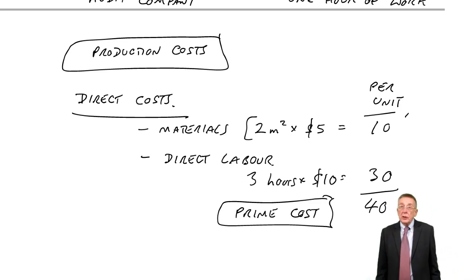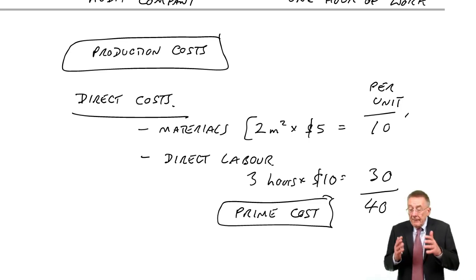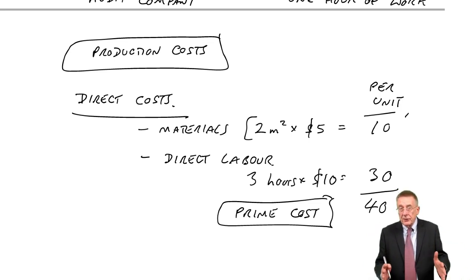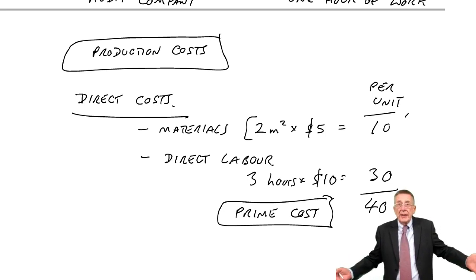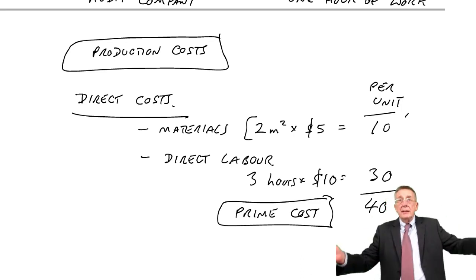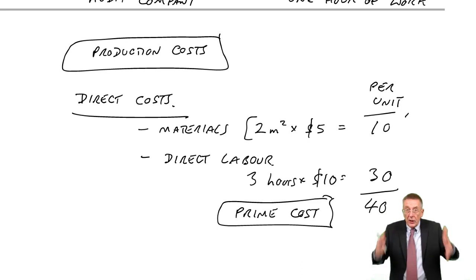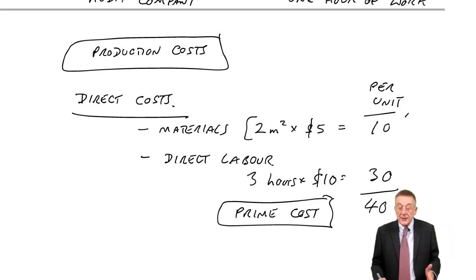However, that's not the full cost of making a desk. Remember, we're only interested for the moment in production costs, the costs in the factory. And obviously there's the cost of the wood, the material, the labour. But there'll be lots of other costs in the factory. Things like the rent. If we're renting our factory, it's a cost of the factory, it's a cost of producing the goods.